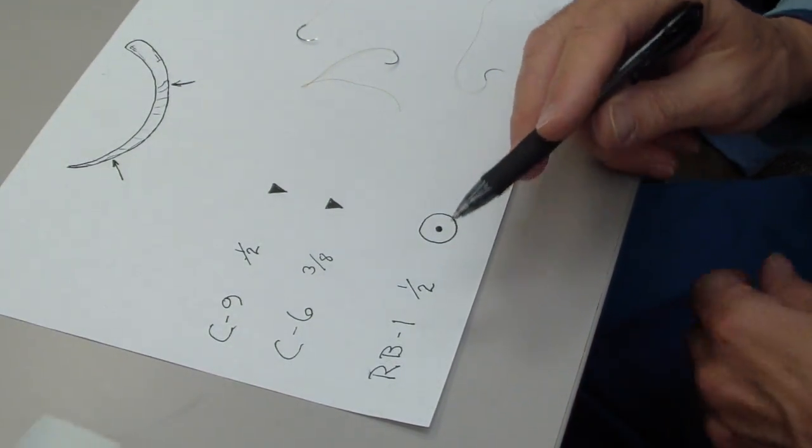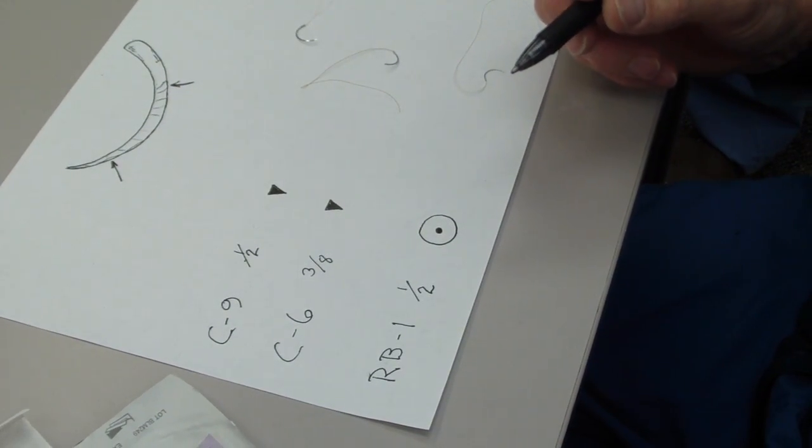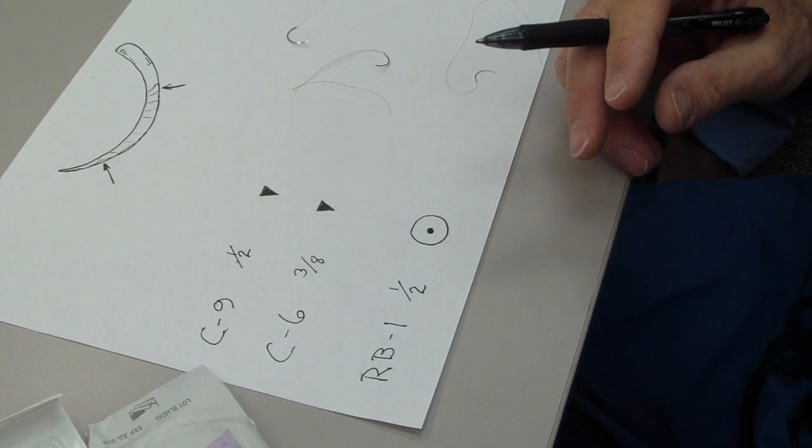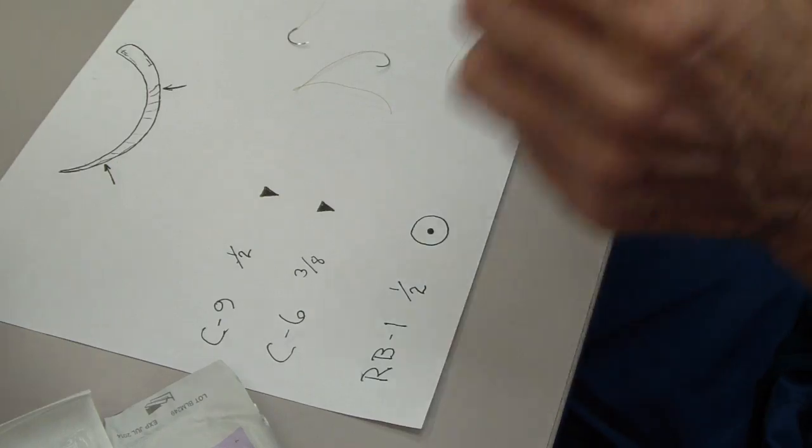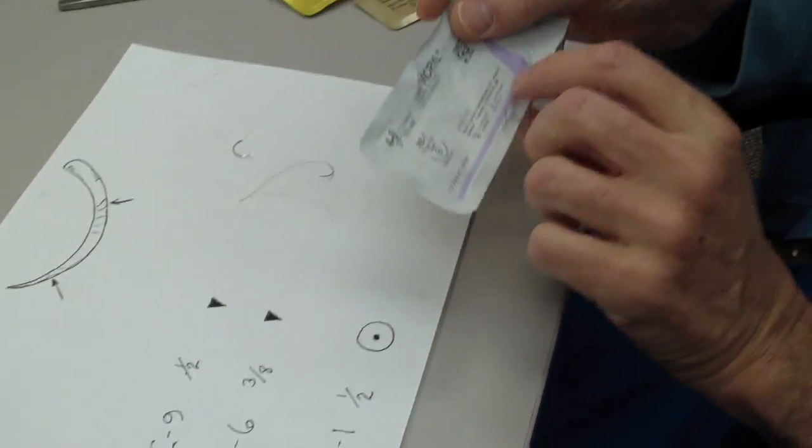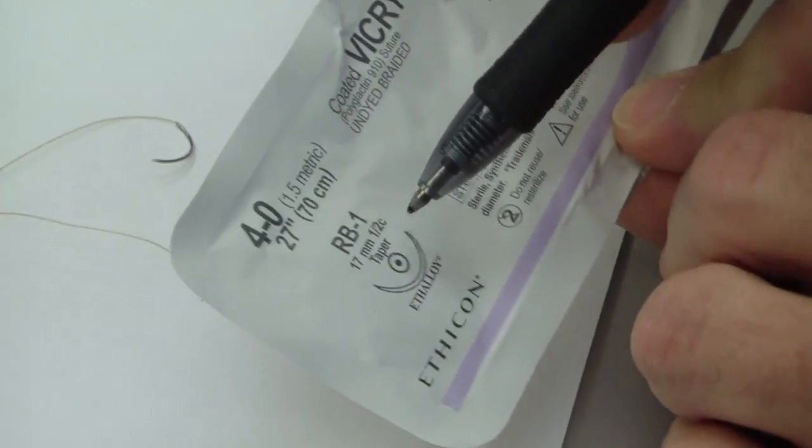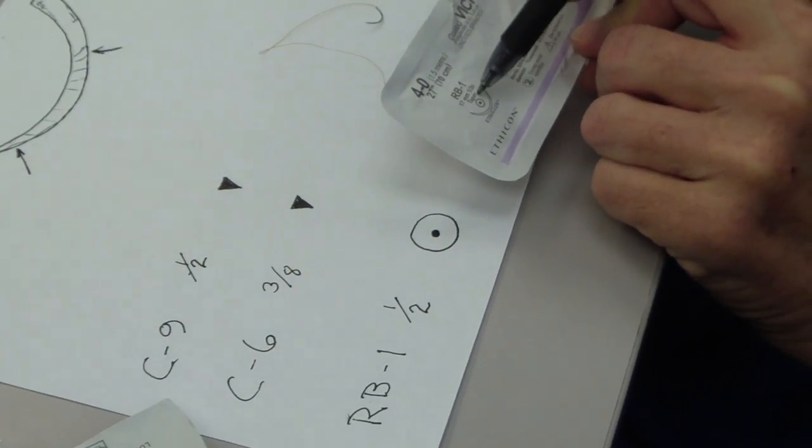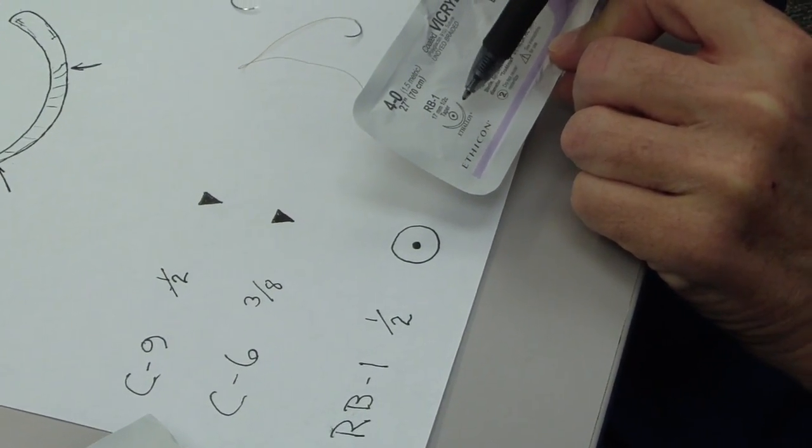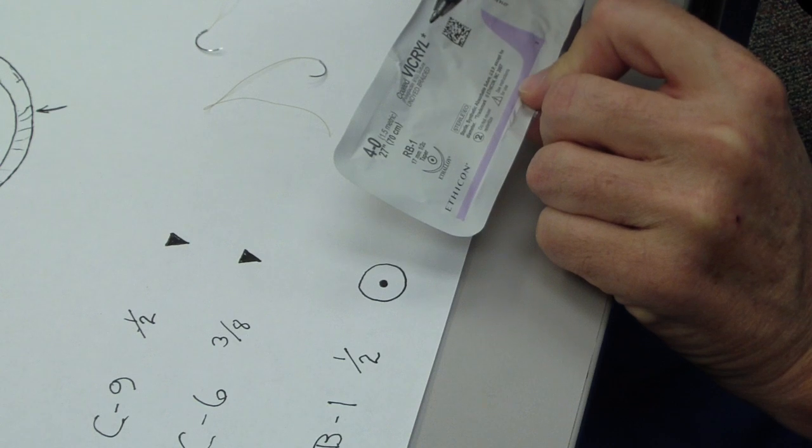We also have some very fine needles, the RB1 one-half. Here's one package right there. RB1—again, it's marked exactly. The little round circle or the triangle is a cross-section of the needle, and then the outline there is whether it's a half or three-eighths or whatever.